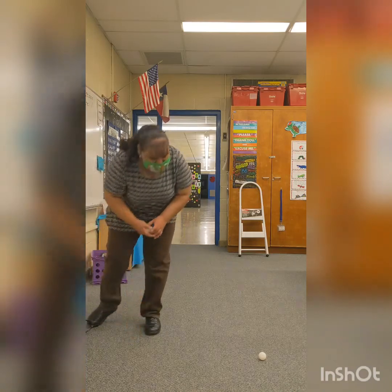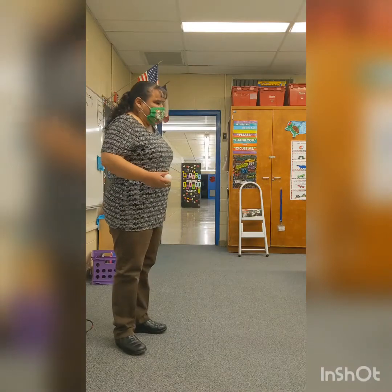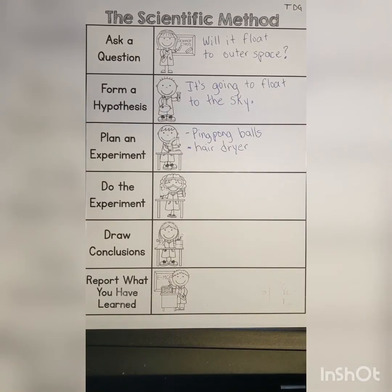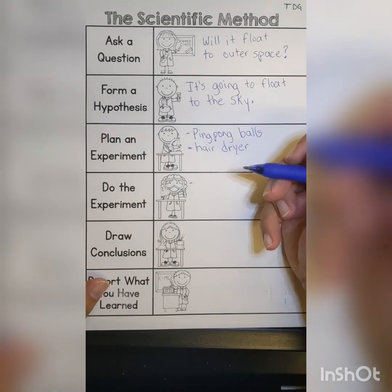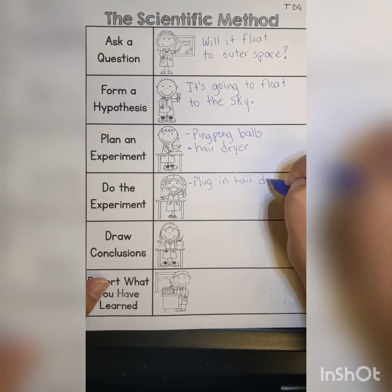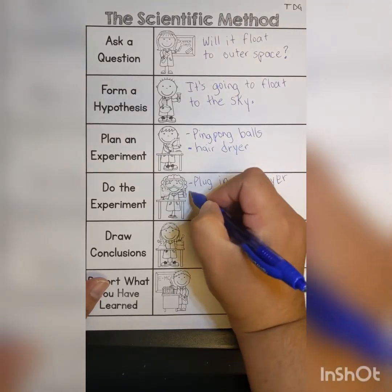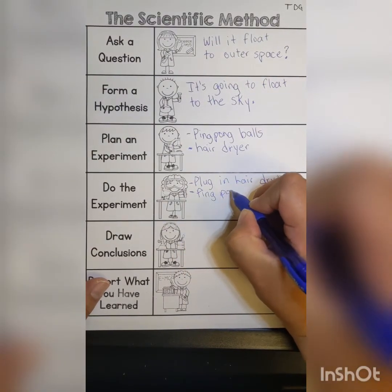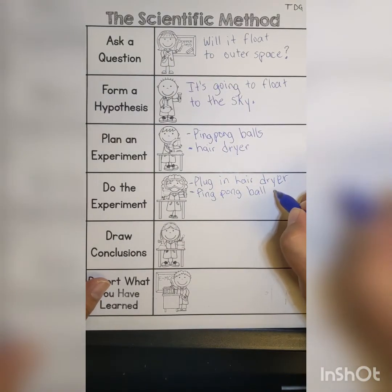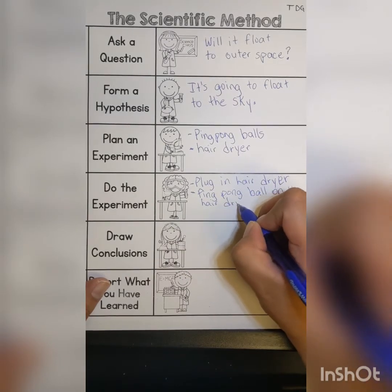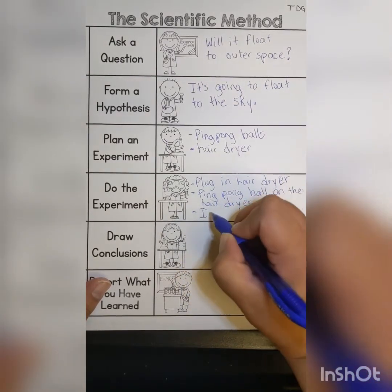Okay, so what did we learn? It floated, right? We did our experiment. On 'do the experiment,' we're going to write down what we did. On number one, we first plugged in the hairdryer. And then after we plugged it in, we put a ping pong ball on the hairdryer. And then it floated.